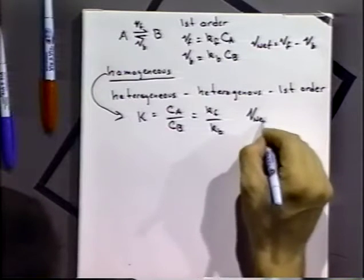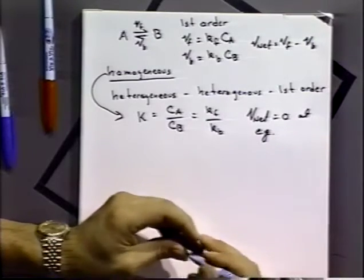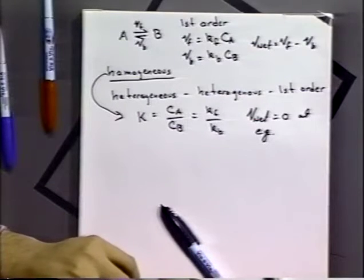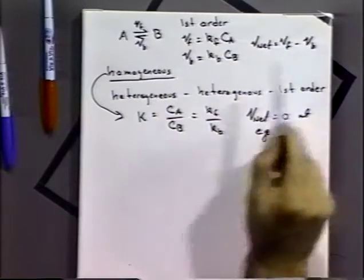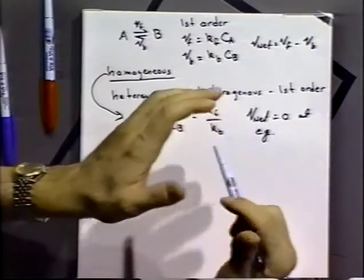The equilibrium constant for this homogeneous process equals C_B over C_A for a first-order process, and that equals K_F over K_B. Also note that V_net equals zero at equilibrium — there's no net reaction velocity. That doesn't mean no reactions are occurring; chemical equilibrium is a dynamic equilibrium, with forward and reverse reactions occurring at the same net velocity. When things are not at equilibrium, one term becomes larger, and we see net production of B or A.